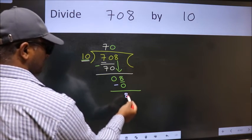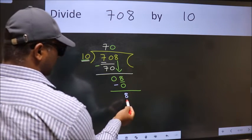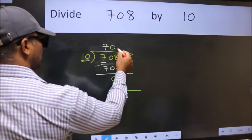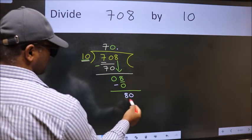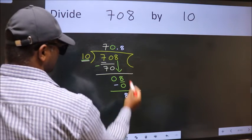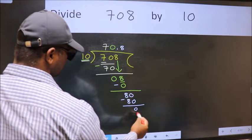Over here, we did not bring any number down. And 8 is smaller than 10. So now we can put dot and take 0. So 80. When do we get 80 in the 10 table? 10 times 8 is 80. Now we subtract. We get 0.